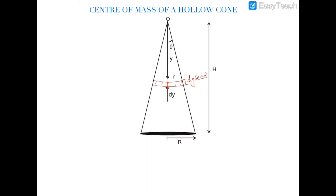I will tell you how — let us draw a right angle triangle. You can see this triangle which I am highlighting here. This side is dy and this angle is theta, so this slant length will be dy sec theta.